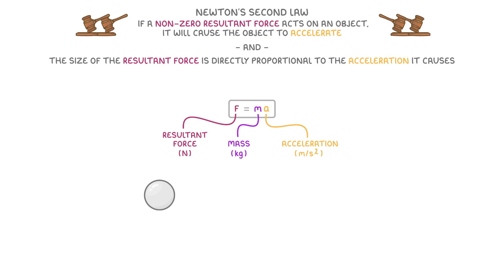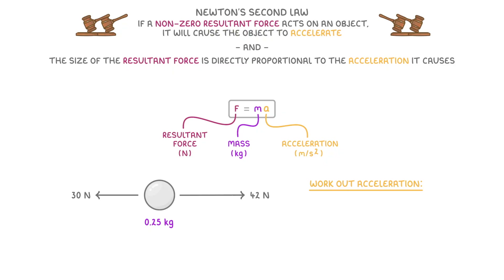So if our particle from earlier had a mass of 0.25 kilos and was acted on by a force to the left of 30 newtons and a force to the right of 42 newtons, then we could use this information to work out the resultant force, which would be 42 minus 30, so 12 newtons to the right. Then we would rearrange our equation to get force over mass equals acceleration, and plug in our values to give 12 newtons over 0.25 kilos, to get an acceleration of 48 meters per second squared.